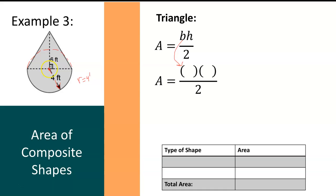So this distance from the center of the circle to the edge of the circle is also 4 feet. And this distance from the center of the circle to the edge of the circle is also 4 feet, making my base equivalent to 8 feet.